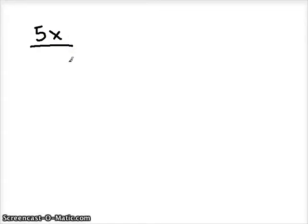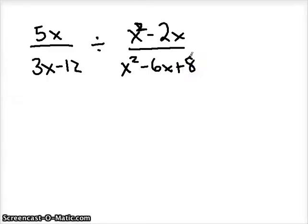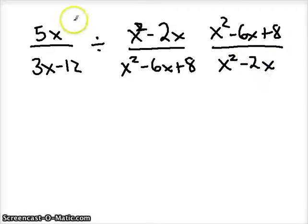So continuing from our last video, dealing with some complex rational expressions here. So first, rewrite your fractions using multiplication and multiplying by the reciprocal. So instead, I'm going to write x squared minus 6x plus 8 on top, and x squared minus 2x on the bottom.